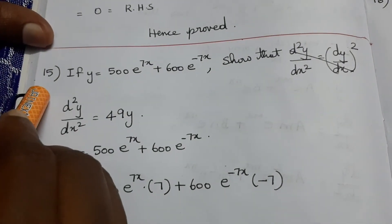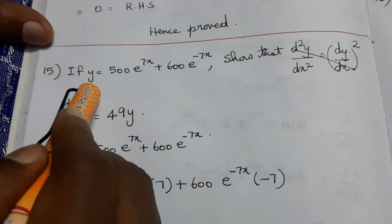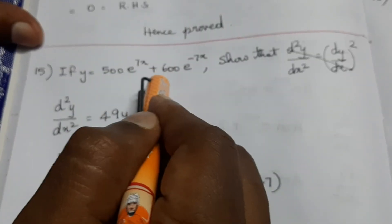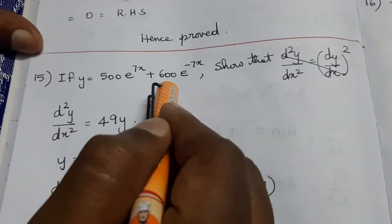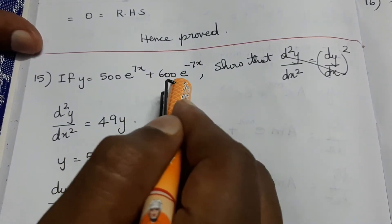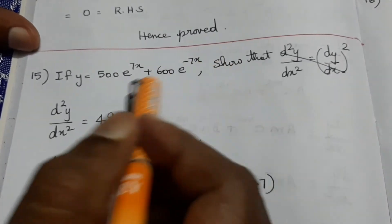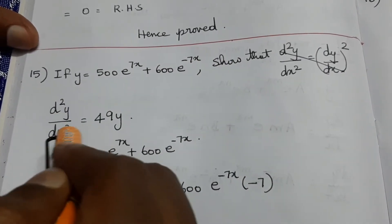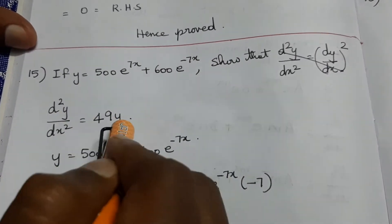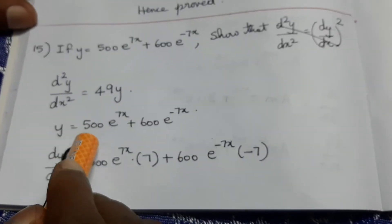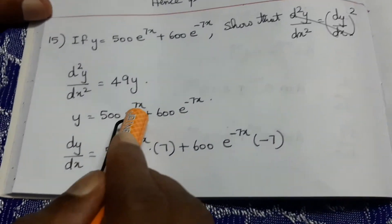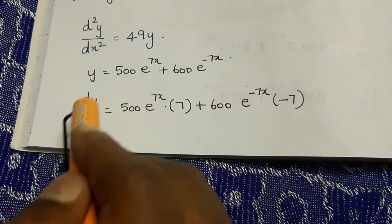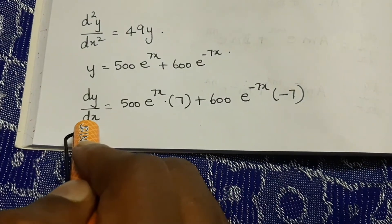Problem 15: if y equals 500·e^(7x) plus 600·e^(-7x), show that d²y/dx² equals 49y. So dy/dx, differentiating 500·e^(7x) plus 600·e^(-7x).